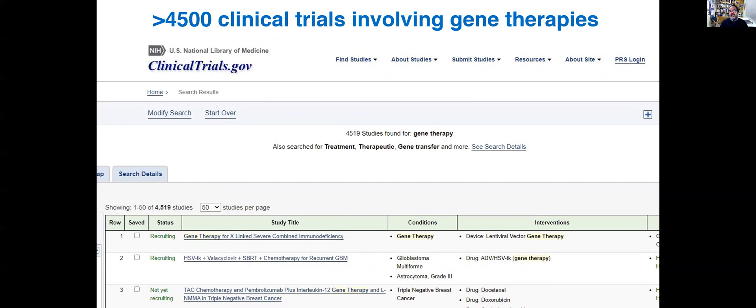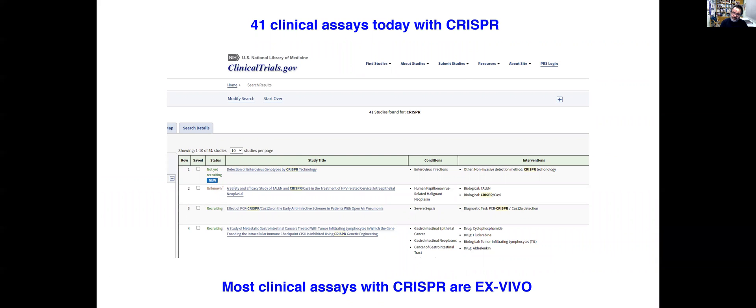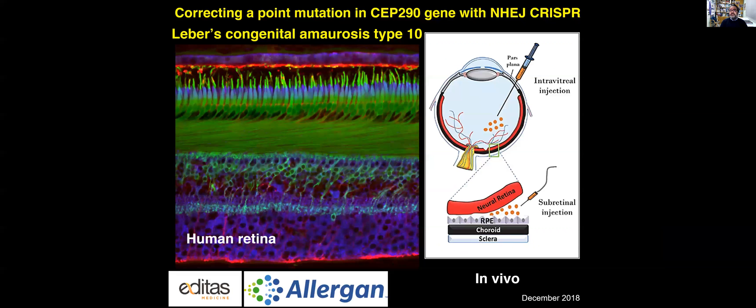There are many clinical trials involved in gene therapies, as many as more than 4,500. And out of these many, only 41 are dealing with CRISPR. So we have 41 clinical trials. Most of them are ex vivo. There's just one of them which is in vivo and it is presented in this slide, in which this is a treatment for Leber's congenital amaurosis type 10, in which the mutations in the gene affected is CEP290. And then the CRISPR tools are delivered in the form of adeno-associated viral vectors, intraocularly, intravitreally and subretinally. This is a clinical trial ongoing.